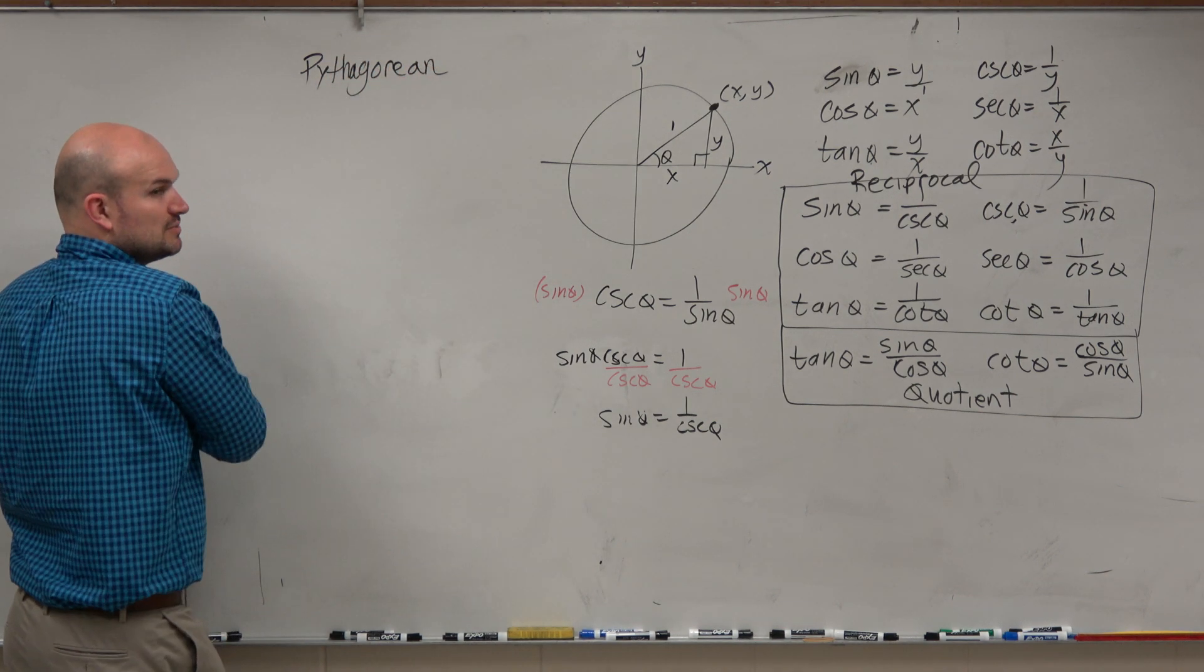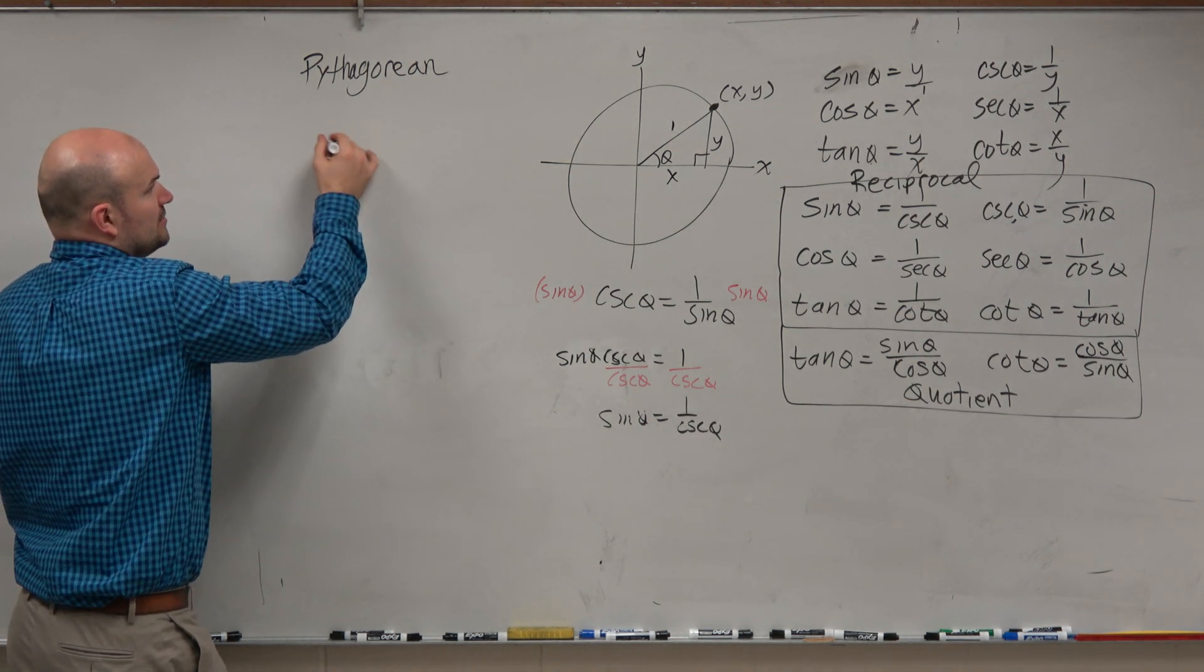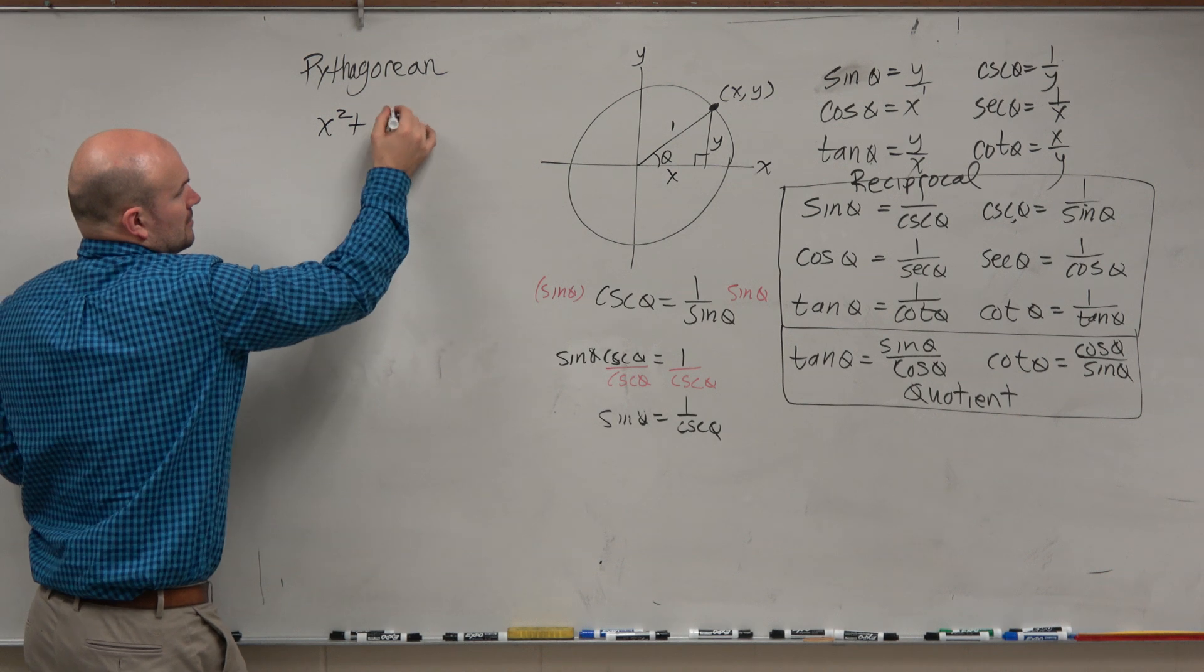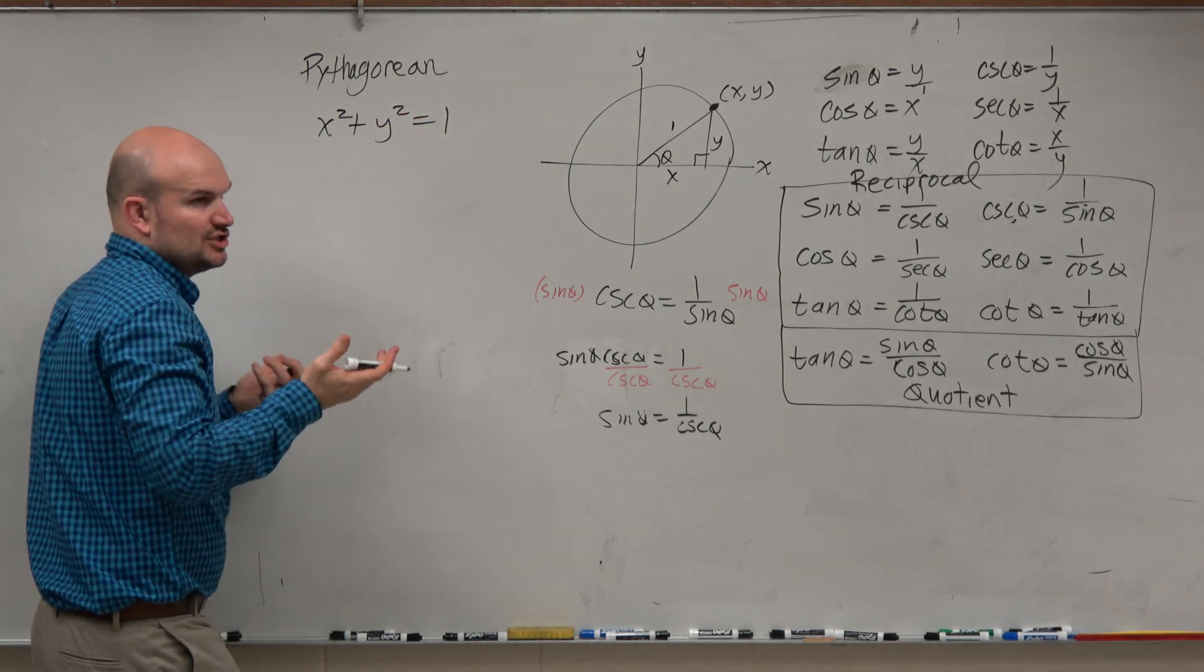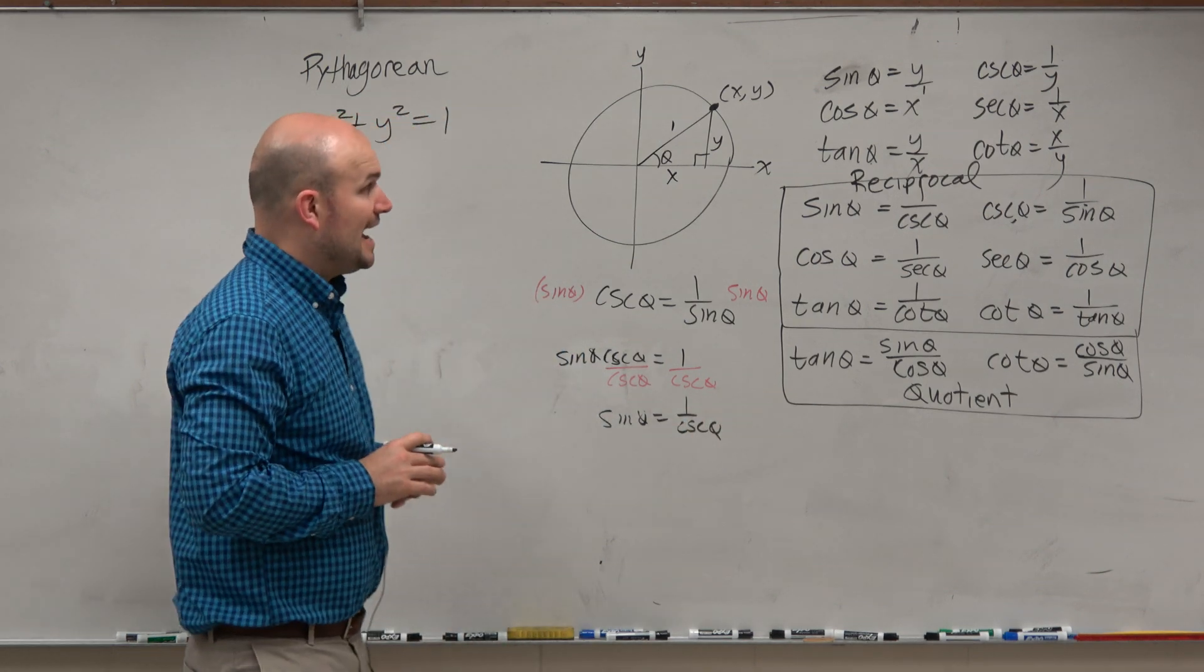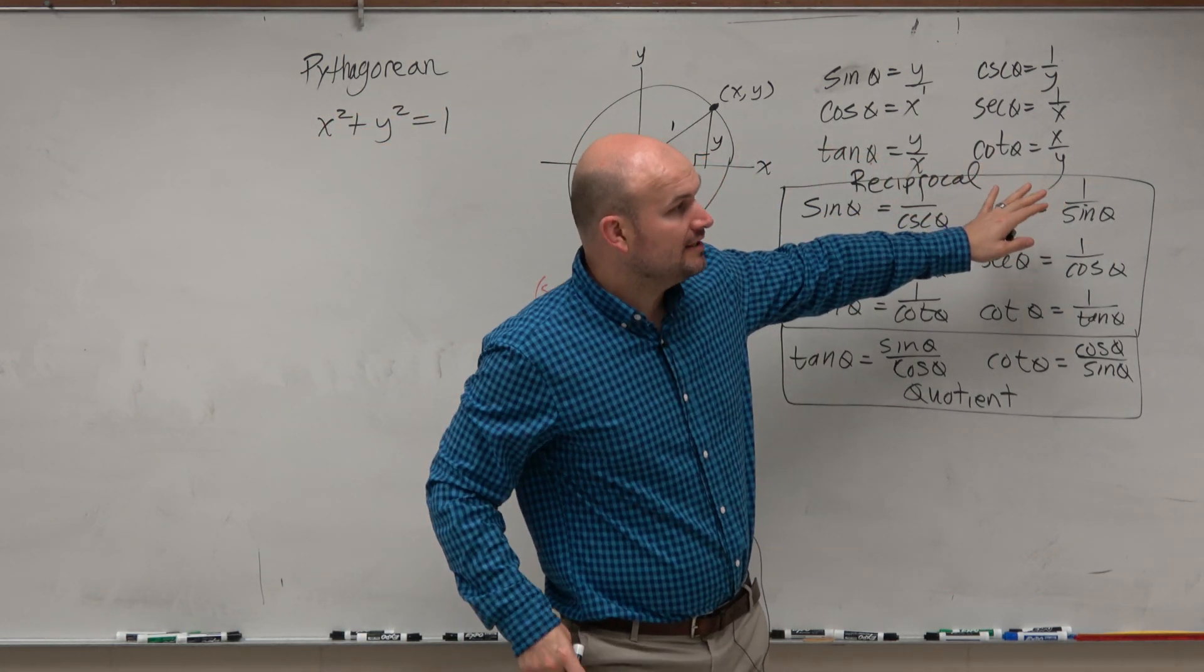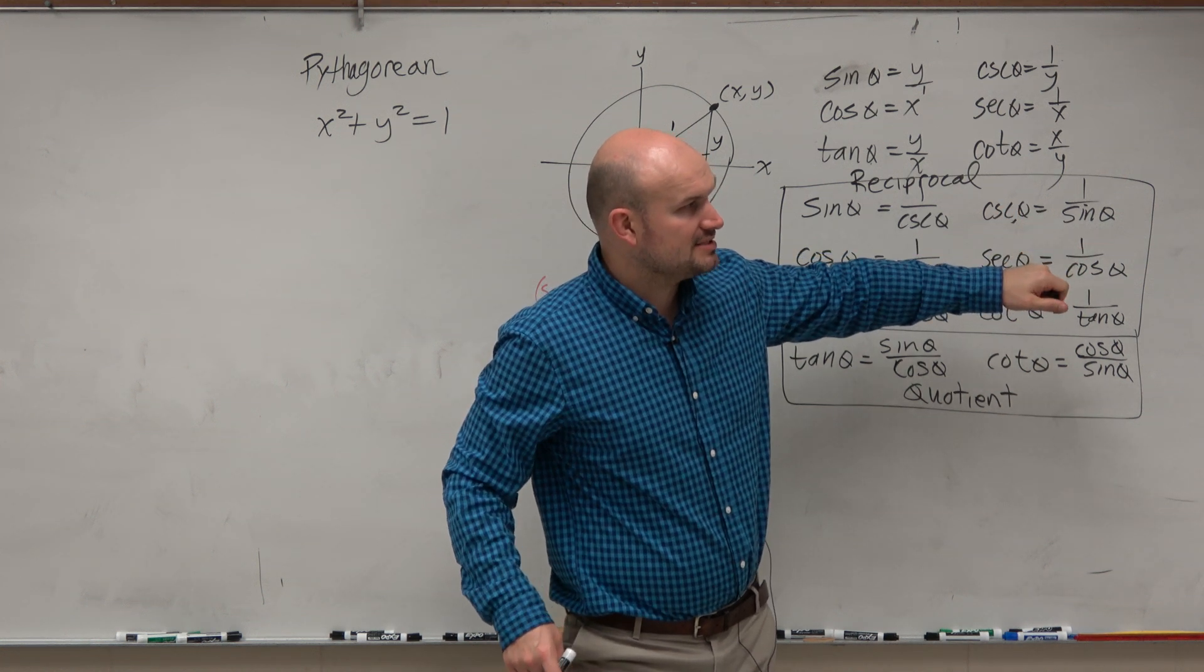So let's go ahead and write this relationship using the Pythagorean theorem. x squared plus y squared equals 1 squared, which is just 1. So that's kind of interesting. Now, based on we have this understanding for x and we have this understanding for y, can't we go ahead and also rewrite this?